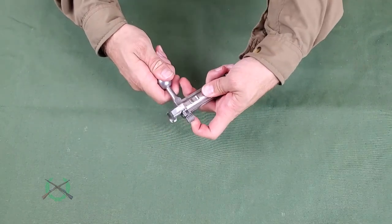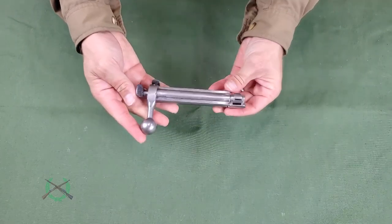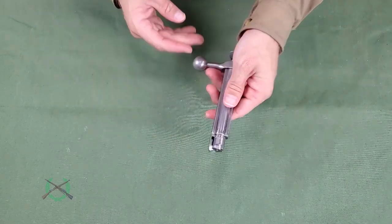Move the safety to the firing position, allowing the cocking piece to seat onto the bolt body. The bolt is now assembled.